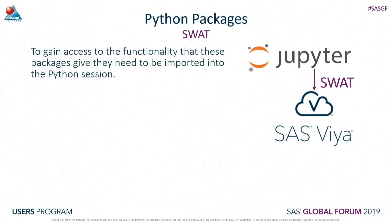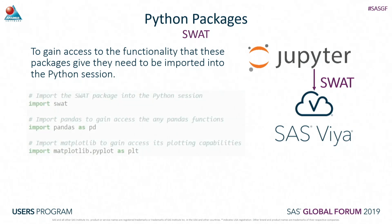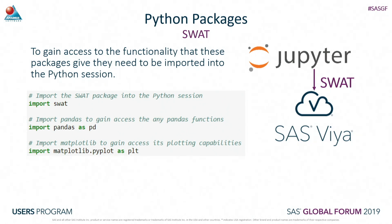Once you've installed these packages on top of your Python distribution, to gain access to them within your Python session you need to import them. For SWOT, it's as simple as typing 'import swat'. For pandas, I've chosen to use an alias 'pd' to call that package. For matplotlib, I've chosen to import just a subset - 'matplotlib.pyplot' - so I don't want to import the whole thing, just a small amount of it.